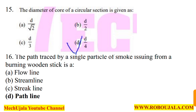In question number 15, remember this formula: the diameter of the core of a circular section is given as D divided by 4. Option number D is the correct option. Remember, for the diameter of core of a circular section, the formula is D by 4.